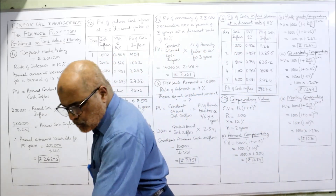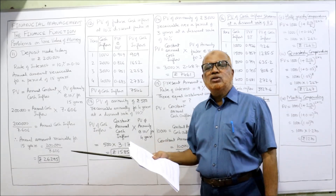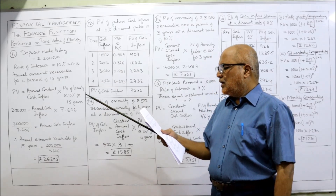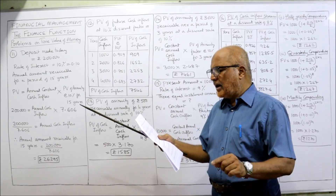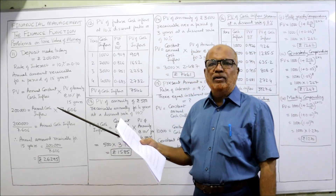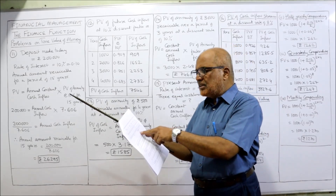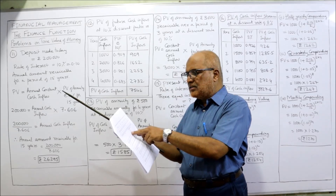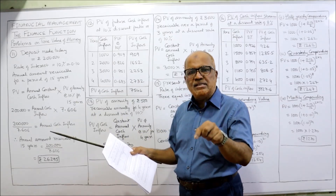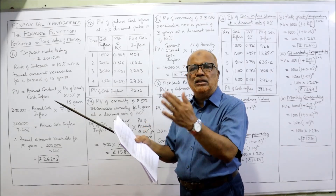Now see problem number 12. Given the time value of money as 10% discounting factor, you are required to find the present value of future cash inflows received over the next 4 years. We cannot use annuity because the annual amounts are different — they are not the same. First year 1,000, second year 2,000, third year 3,000, fourth year 4,000. So what is the present value of all cash inflows?